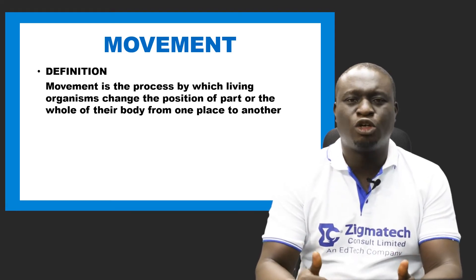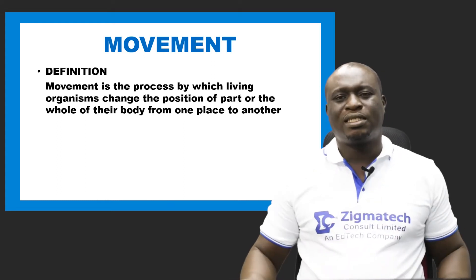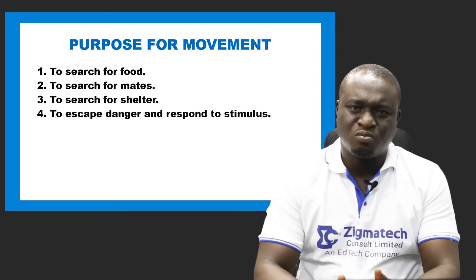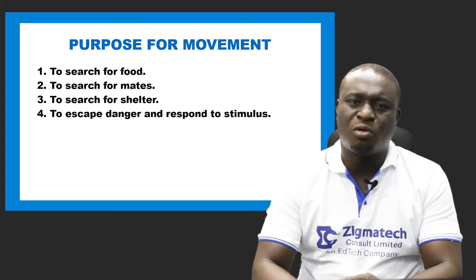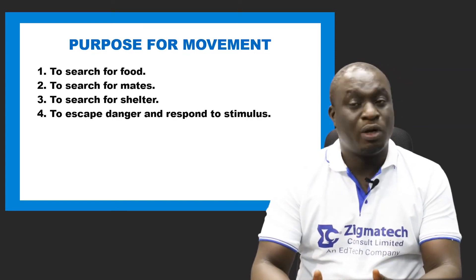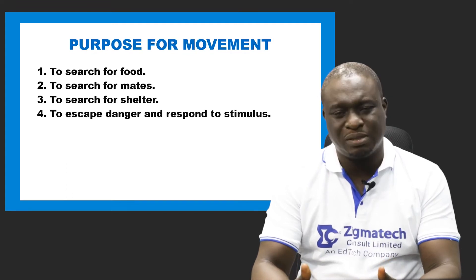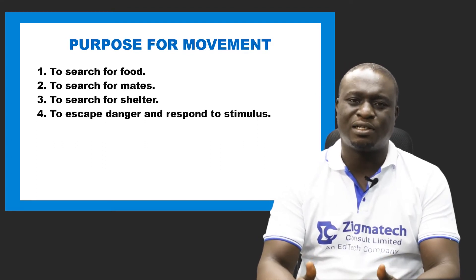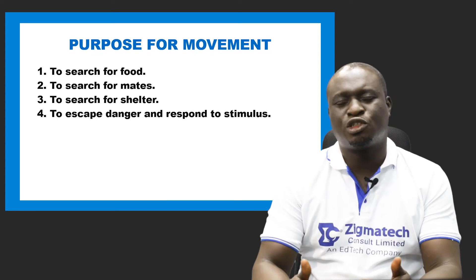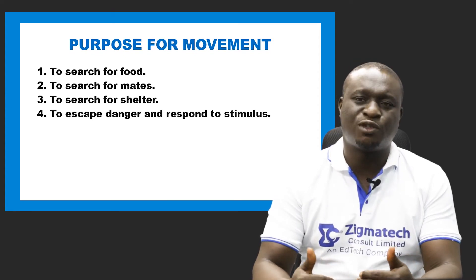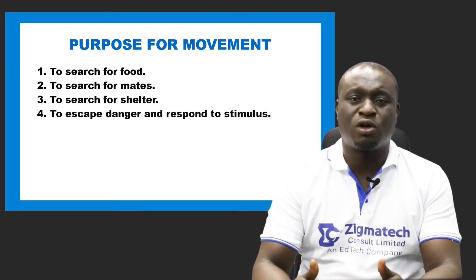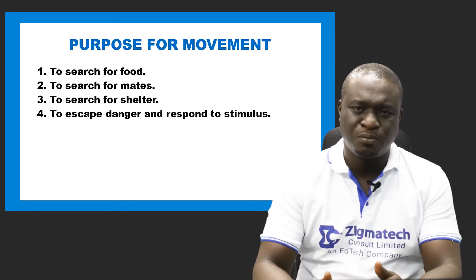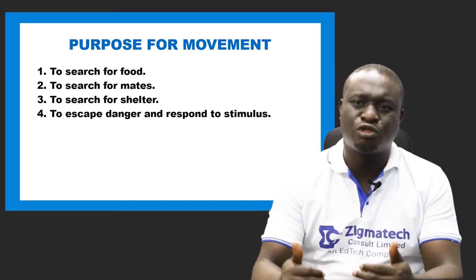Now let's take a look at the purpose for movement. There is a reason for movement. One of the purposes for movement is to search for food — we're going to see how some single-celled organisms use organelles or structures found in their cells to search for food. It can also be used to search for a mate, to search for shelter, and to escape danger and respond to stimulus.